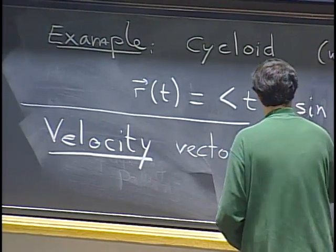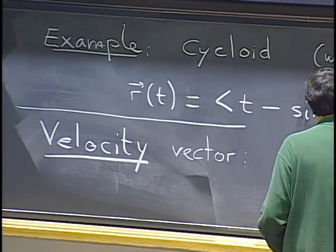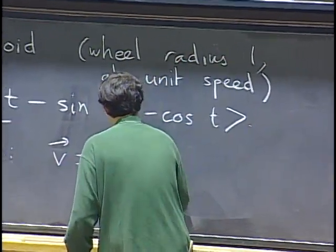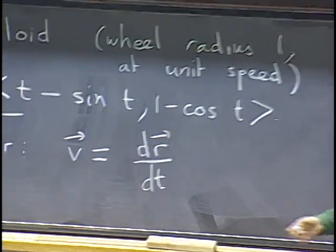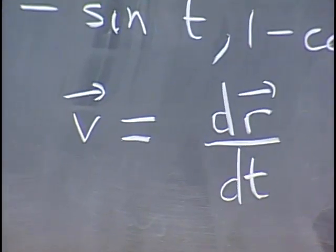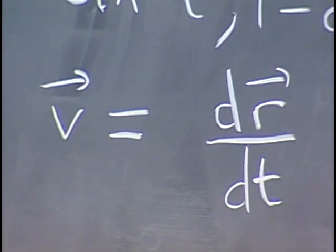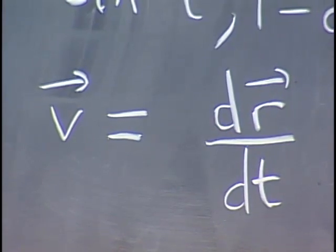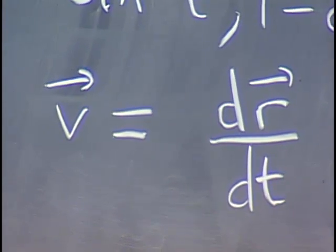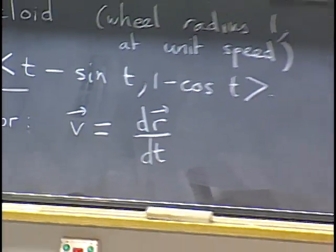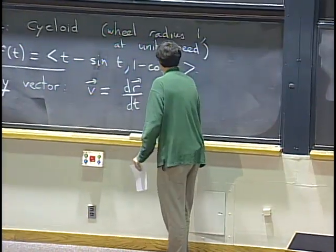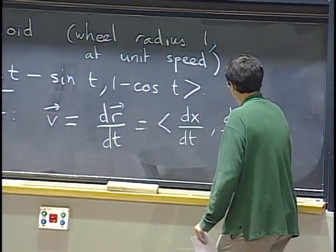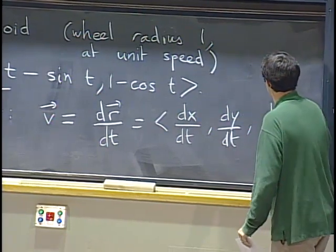The velocity vector v — v here stands for velocity more than for vector — you get it by taking the derivative of the position vector with respect to time. The basic rule is you can take the derivative of a vector quantity just by taking the derivatives of each component: that's just (dx/dt, dy/dt), and if you have a z component, dz/dt.